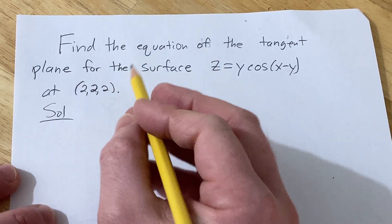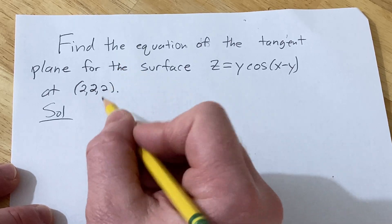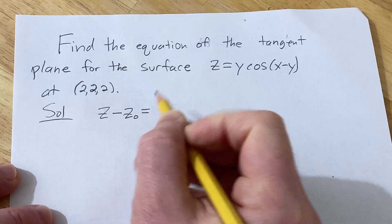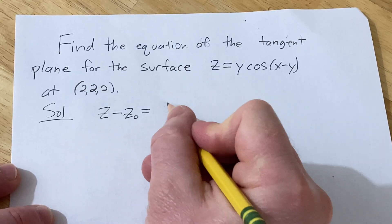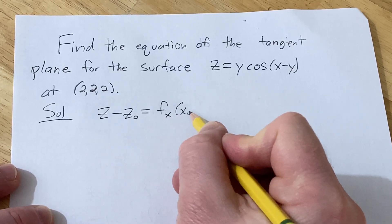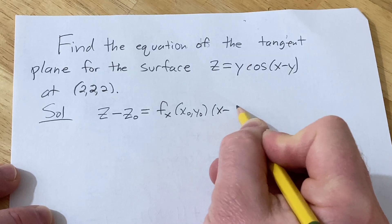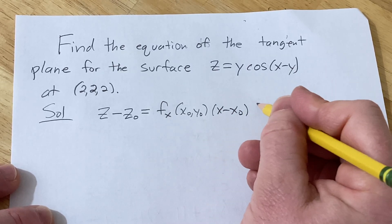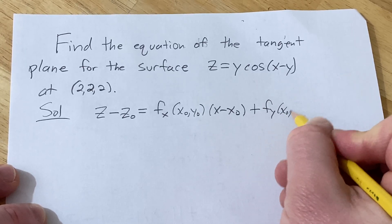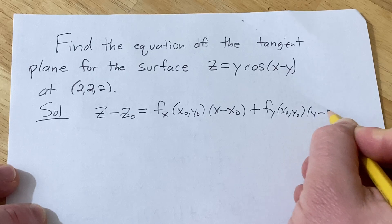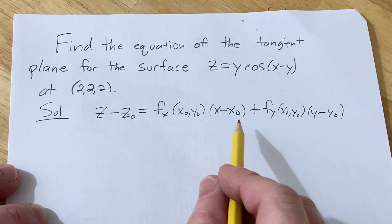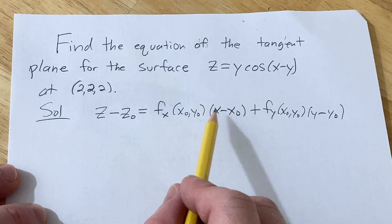First thing we're going to do is write down the formula for the equation of the tangent plane, which is z minus z-naught equals the partial derivative of f with respect to x at (x-naught, y-naught) times x minus x-naught, plus the partial derivative of f with respect to y at (x-naught, y-naught) times y minus y-naught. This is the formula for the equation of the tangent plane to a surface at a point (x-naught, y-naught, z-naught).